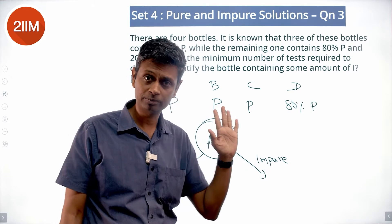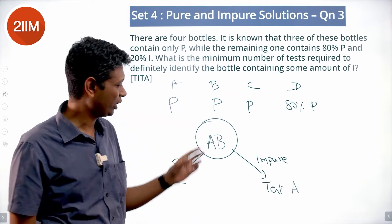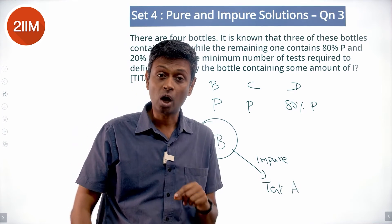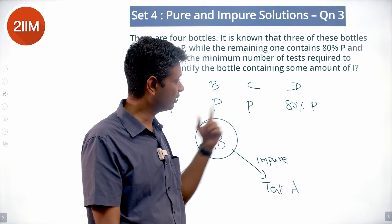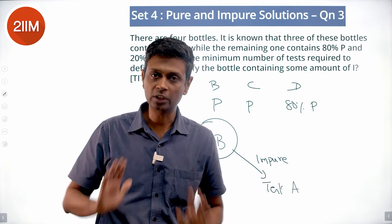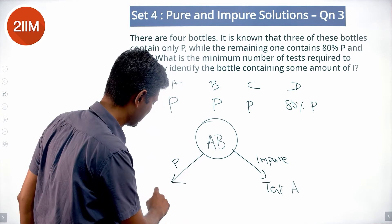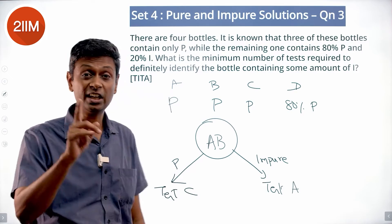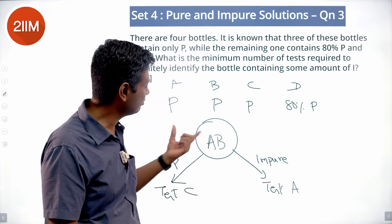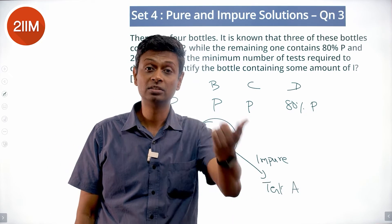Test 1: Mix A and B in equal quantities and test. If the outcome is impure, one of A or B is impure — then do Test 2: test A alone. If A is pure then B is impure; if A is impure, we've identified it. If the A+B mixture turns out to be pure, both are pure — then do Test 2: test C. If C is pure then D is impure; if C is impure, C is identified. So in two tests we can definitely identify the impure bottle.